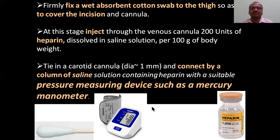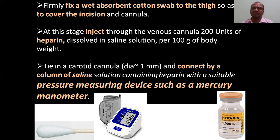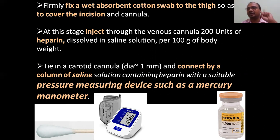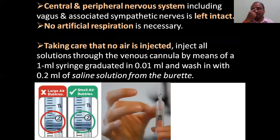At this stage, inject 200 ml heparin via the venous cannula to avoid clotting of the blood. Then you can give your test injections. Use a suitable pressure measuring device such as a mercury manometer to measure BP — a mercury manometer uses mercury to measure BP.